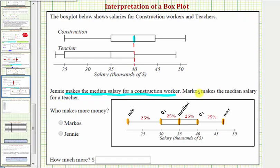Next we're told that Marco makes the median salary for a teacher. So looking at the box plot for teachers, Marco makes this amount of money here per year, which we can see is thirty-five thousand dollars per year.